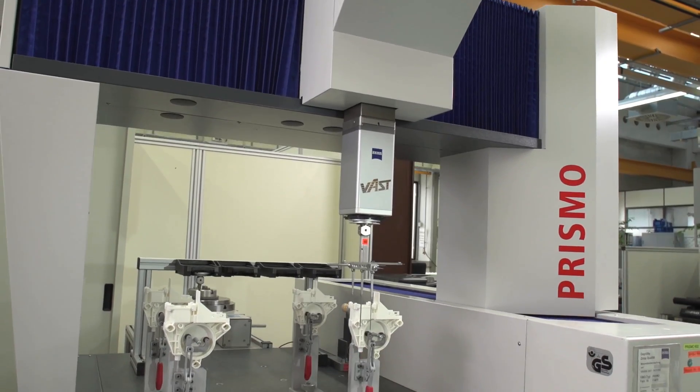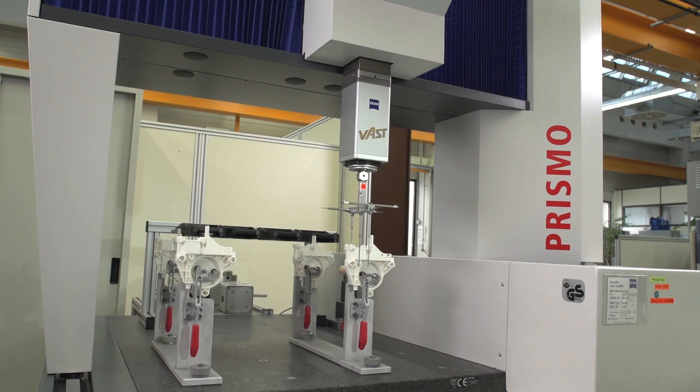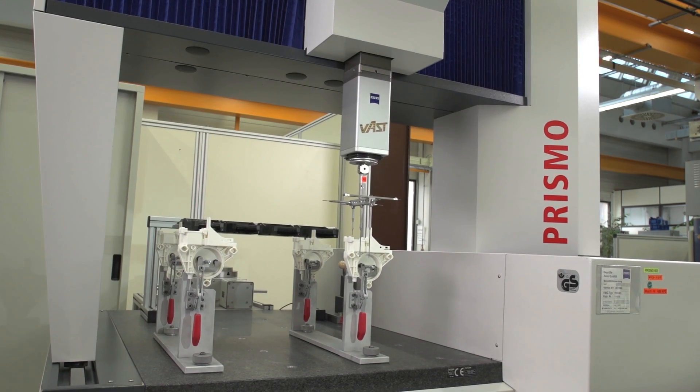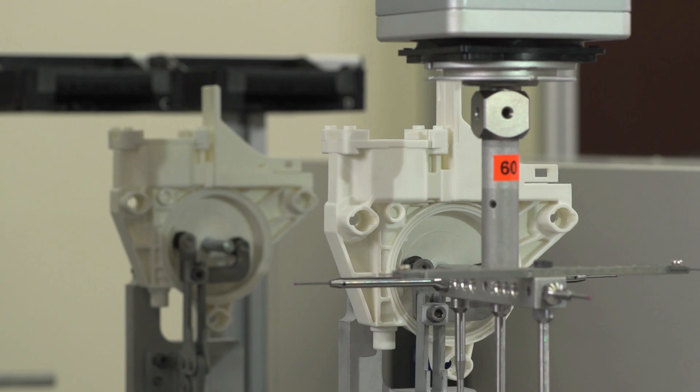In the 1990s, the higher quantities necessitated the use of measuring machines featuring high measuring speed without compromising precision. As a pilot customer, we introduced a Zeiss Prismo Vast. From then on, measuring a gearbox took just 10 minutes instead of 40.